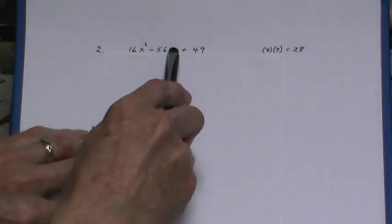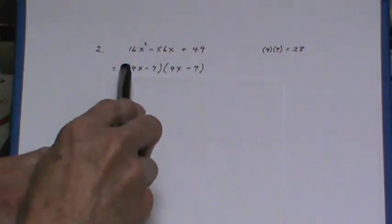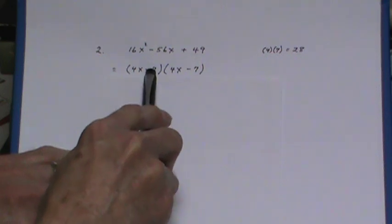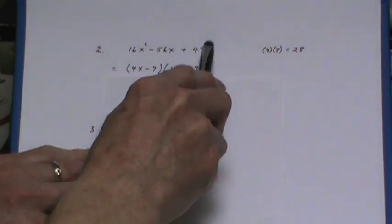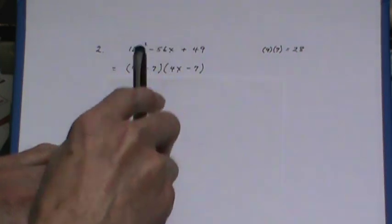4 times 7, if it's half of this then those two factors are identical. 4 times 4 is the 16 and there's the 7 times 7 is 49, and the outer and the inner give us that negative 56.